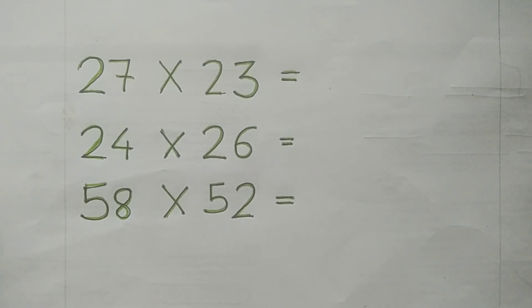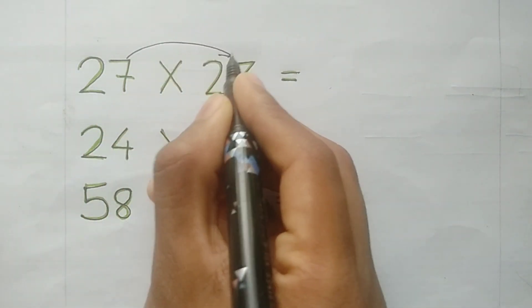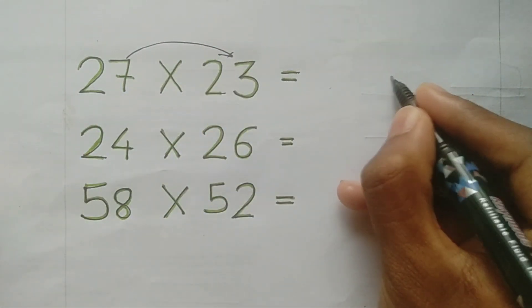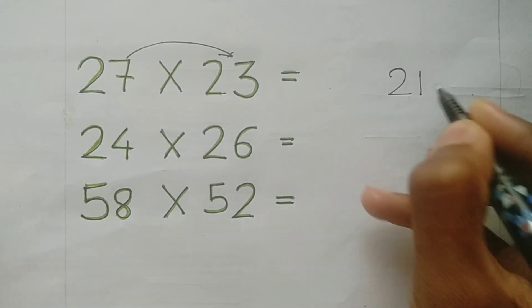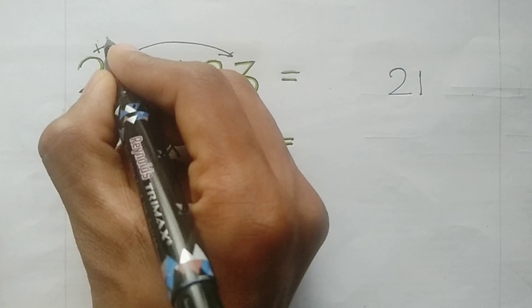Hello everyone, so how to solve multiplication trick easily. First one: 27 into 23. Second number is 27, 3. So multiplication, 7 into 3 is 21, write 1, next number 3. So 2 into 3 is 6, 621 answer.